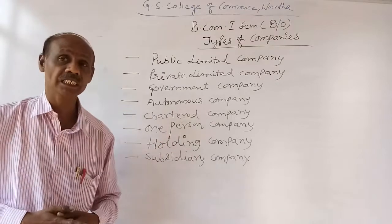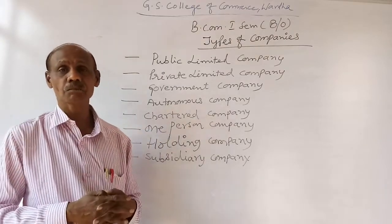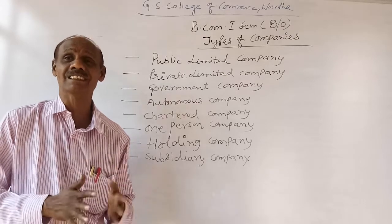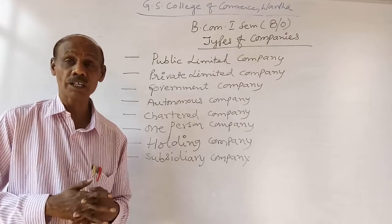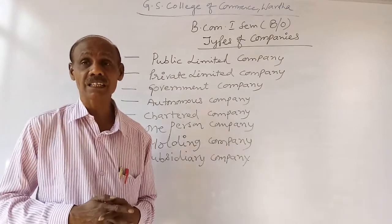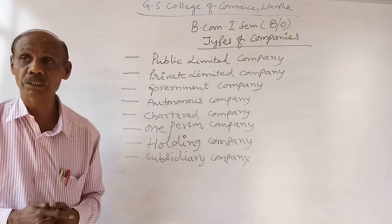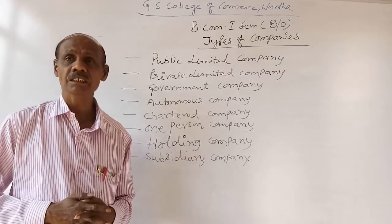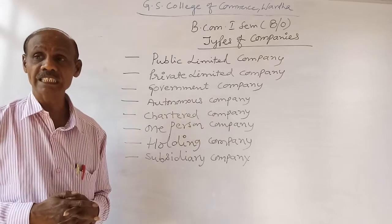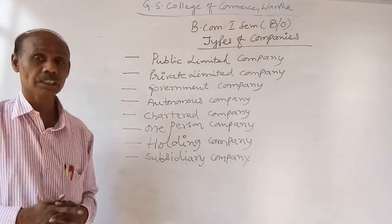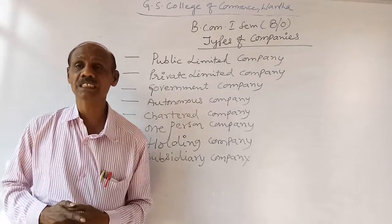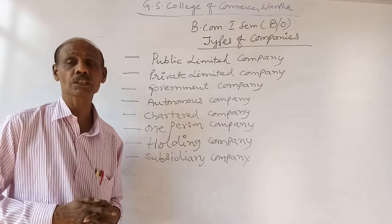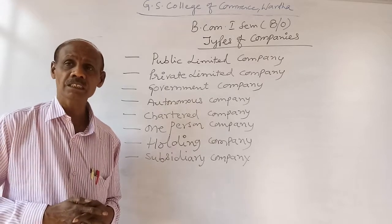The next type is a chartered company — a company constituted or formulated based upon a charter or governmental order issued by the king or queen of a country. According to the charter or gazette of a country, if a company has been created, formulated, constituted, and maintained and controlled accordingly, such companies are called chartered companies. In India, we do not have any chartered companies, but in the UK, Australia, and some other countries where the rule of a king or queen still exists, chartered companies can be found.